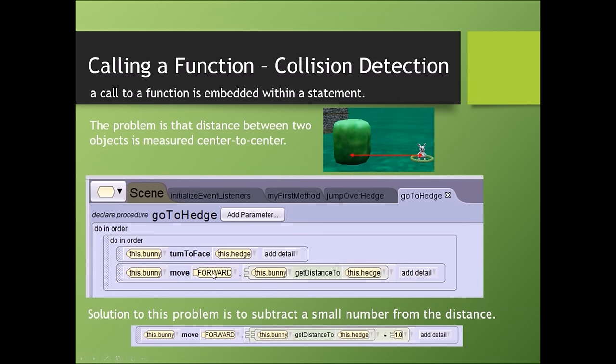With our statement move forward this bunny get distance to the hedge, the bunny will collide with the hedge and would go all the way to the center of the hedge. We want to avoid this collision. The solution to this problem is subtract a small number from the distance. That means we are going to say bunny get distance to minus 1.